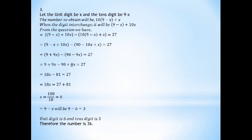Then with 10x and x combined: 9x. So 9 plus 9x, the sum of the terms is 10x. The sum is 9x minus 9x, equal to 27.